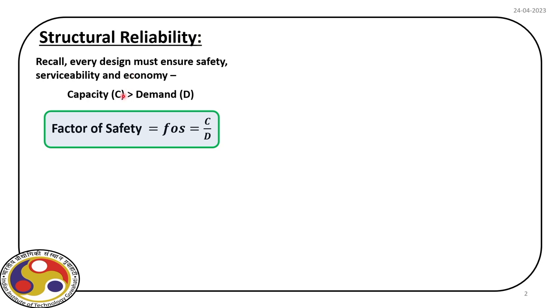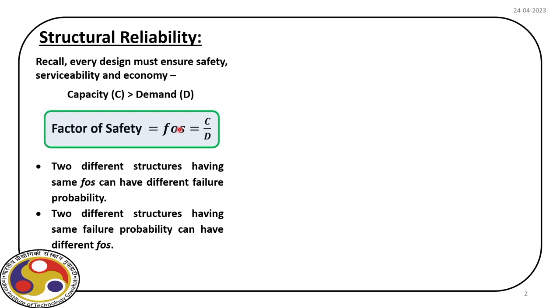In this framework, where we play with capacity and demand, we look at a non-dimensional number called the factor of safety. If this number is more than one, we have reserve strength to deal with any demand from external or sometimes internal sources. When we adopt this safety-based design, we normally do it in the deterministic framework. From experience, we have seen that two structures designed based on this approach with the same factor of safety can offer different levels of reliability or probability of failure. This motivates us to include uncertainty within the design process.